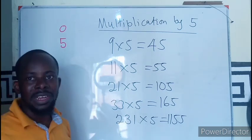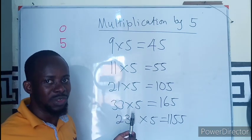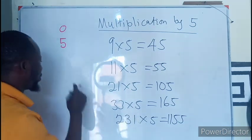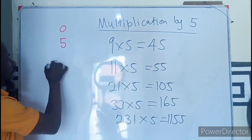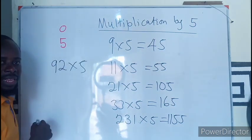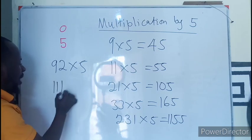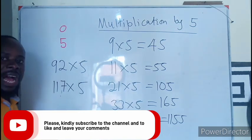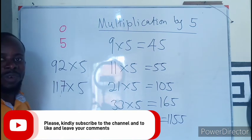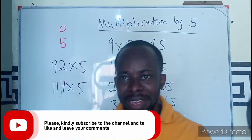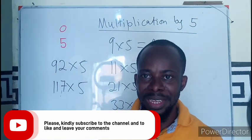So I believe at this point you can multiply any number with 5. So do that. Let's see: we have 92×5, this is an even number. Then I have 111×5—I think this is too obvious. So we have 117×5. If you get the answer, post that in the comment section. Thank you for watching. Bye bye.